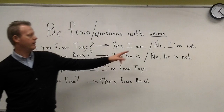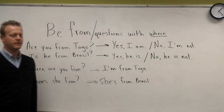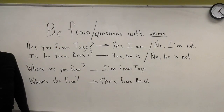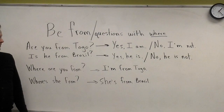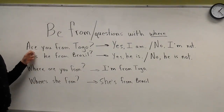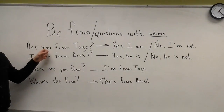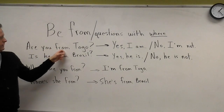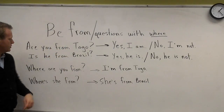Or, no, I am not. No, I am not from Togo. Okay, so you see the be verb, the subject — you — and then the location.